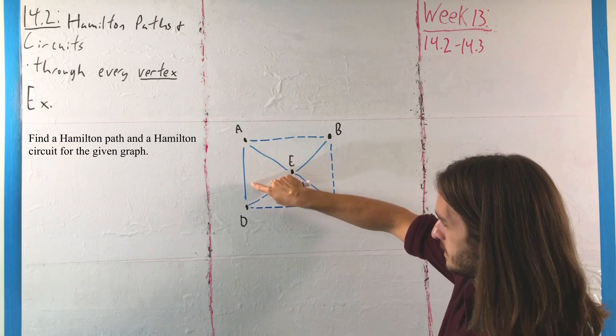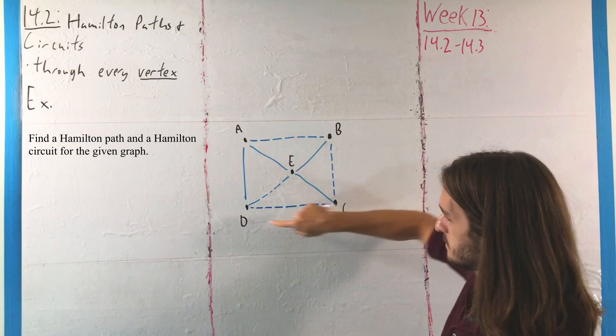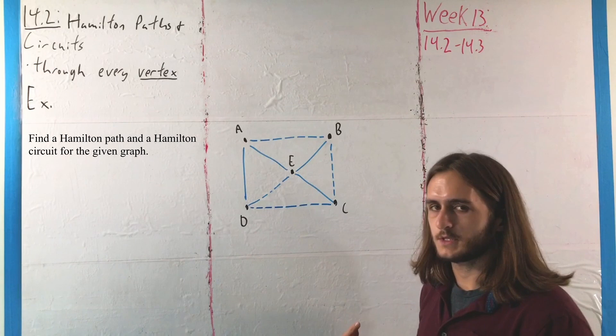It doesn't really matter to us that we didn't hit these four edges there. What matters is we've hit A, B, C, D, and E. We've hit all four. So we have our Hamilton path, and if we want our Hamilton circuit, we just have that one.